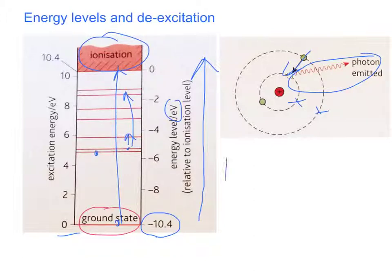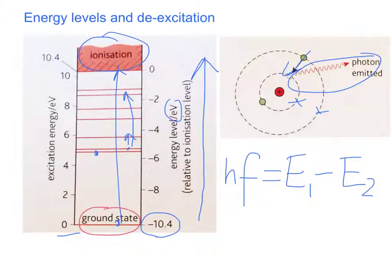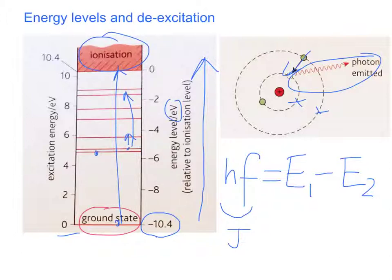Equation-wise, the energy of the photon, which is Planck's constant times its frequency, equals the difference between the two energy levels E1 and E2. It is important to remember that the energy of the photon in terms of hf is in joules, so you need to convert your energy level values from electron volts to joules. To do that, you multiply by the charge on an electron.